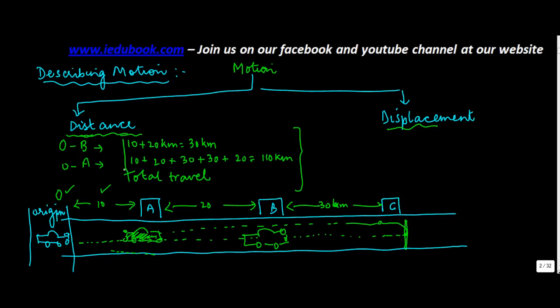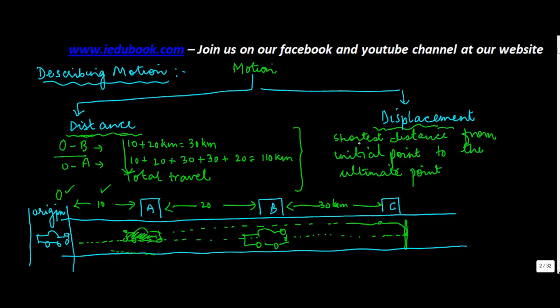The total travel made by the car is known as the distance. Now how about displacement? Let's consider O to B. Displacement basically is the shortest distance from initial point, also known as the origin, to the ultimate point. Now if you apply this definition as the car moved from O to B, the displacement was again 30 km which is the same as this one.